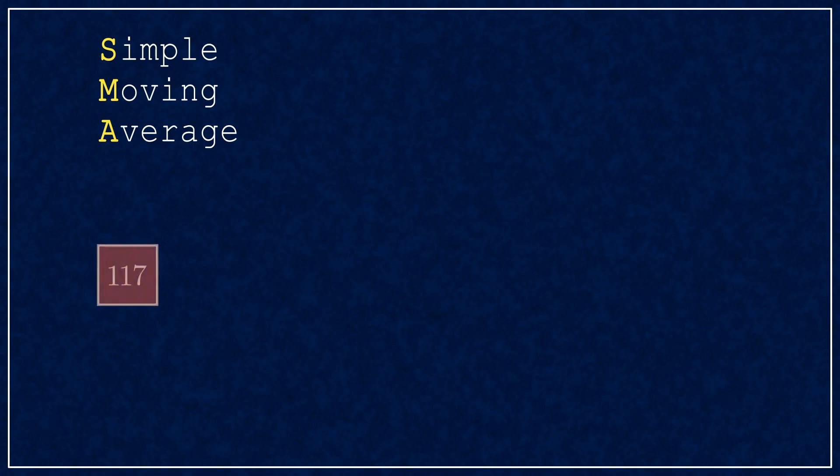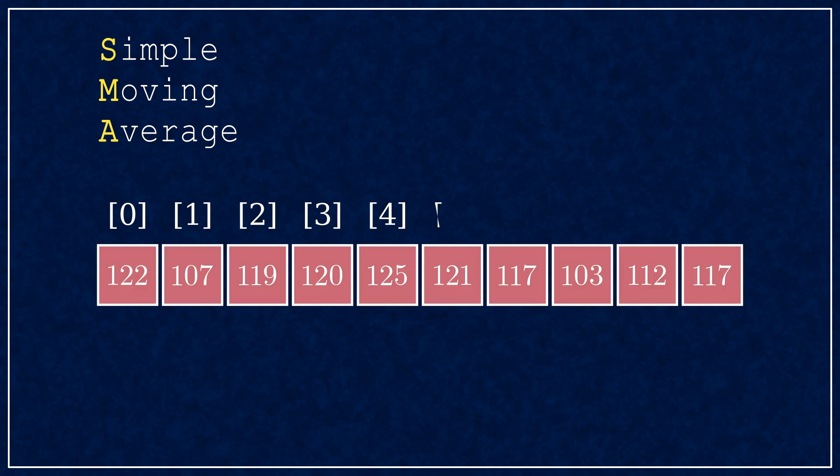You can deal with that by averaging a couple measurements before printing. I'll be using a simple moving average filter with 10 elements. You need a data buffer to store the past values, here's what the buffer looks like with array indices.